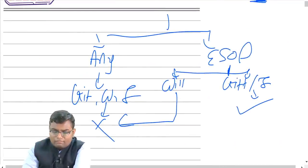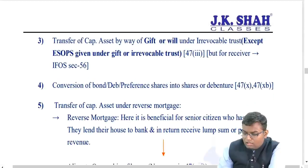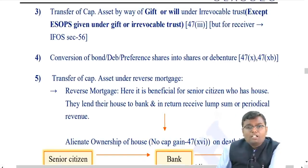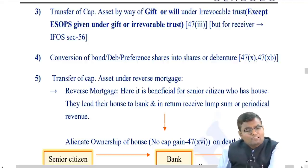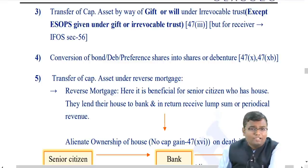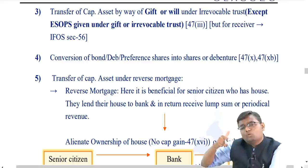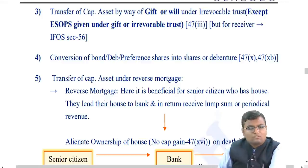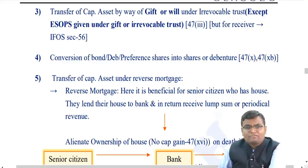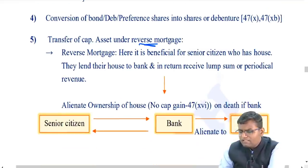Conversion of a bond, debenture, or preference shares into other shares or debentures is also not regarded as a transfer. The period of holding of the converted asset is counted from the date on which the original asset was purchased. So whenever a convertible debenture is converted into shares, or preference shares into equity shares, it is never a transfer.